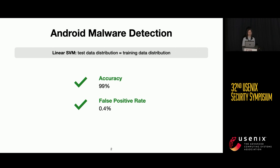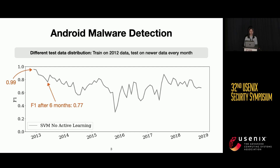The great performance exists only because the test data distribution is roughly similar to training data distribution. In this experiment setup, we did a random train-test split. In the real-world deployment scenario, we have to train a malware classifier on samples we've seen so far and deploy it on future test data. We collected seven years' worth of data, trained an Android malware classifier on data from 2012, and tested it on future data over the six-year period.